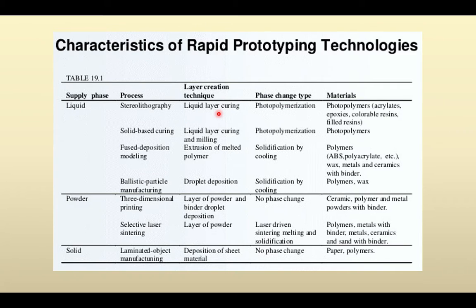Fused deposition modeling (FDM): 'fused' means two particles fuse together. Material is deposited over a plate in liquid form, allowed to cool, and solidifies — phase change by normal cooling. Materials include ABS, wax, ceramics with binders. This type of 3D printing equipment is commonly found in college labs and costs less than one lakh rupees. For example, at NIT Trichy in the production department, during a workshop they created keychains using this process.